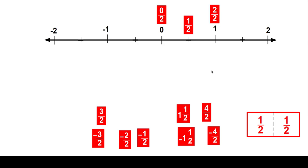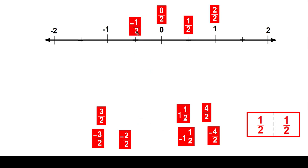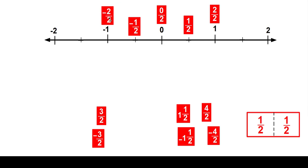Now let's talk about the opposites. The opposite of one half would be negative one half. Remember, it has the same absolute value and they're on opposite sides of the number line. So this is the opposite of this and this is the opposite of that. And the opposite of negative one would be negative two halves. So over here, now I've done one half, two halves.